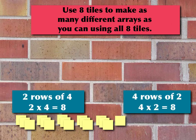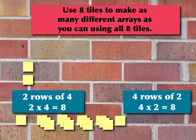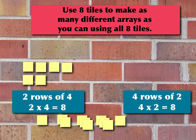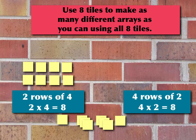We're still looking at using eight tiles to make as many different arrays as possible. Let's take these eight tiles and make two rows of four. I'm going to have two rows and four tiles in each row: one, two, three, four — one, two, three, four. So I do have my two rows and my four columns. Columns go up and down, and rows go left to right. Two times four is eight.